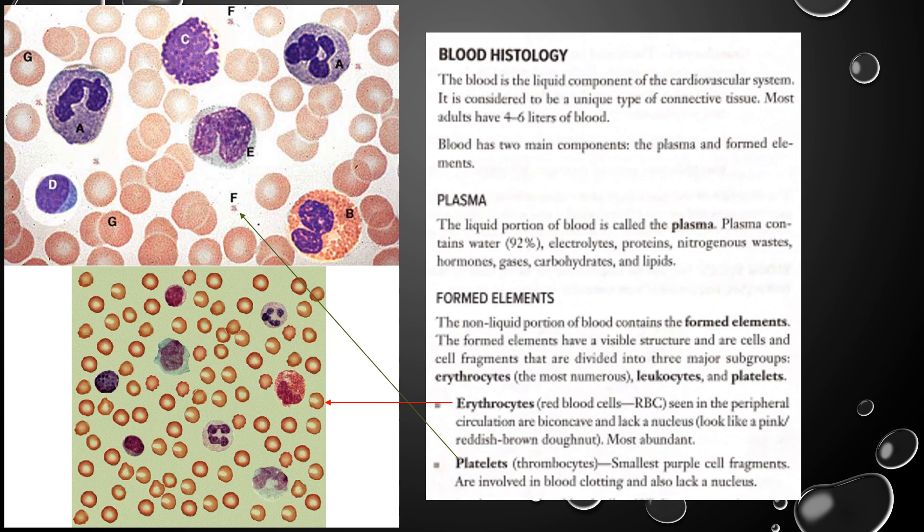Thrombocytes also lack a nucleus, so they're another unique one in that characteristic. They're super, super small — you really have to increase the magnification of a microscope to see these. They're even smaller than the red blood cells, which are sometimes challenging to see under a microscope until you increase to high power. You can identify these thrombocytes with letter F on the picture. From there, we're going to talk about leukocytes.